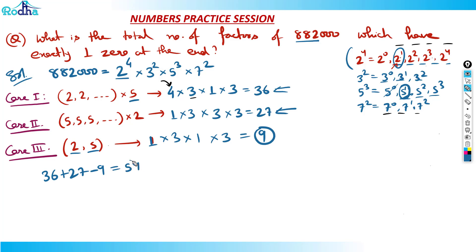So the final answer is 36 + 27 − 9 = 54. It's a beautiful, logical, mistake-prone question. Most people will get 63 as a wrong answer. This approach generalizes — for factors ending in two zeros, one five, one three — you can apply the same case-based method by identifying the restricting factors.